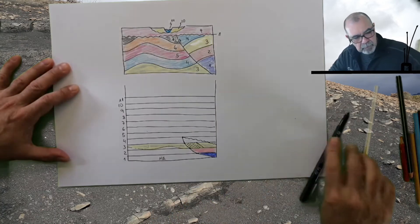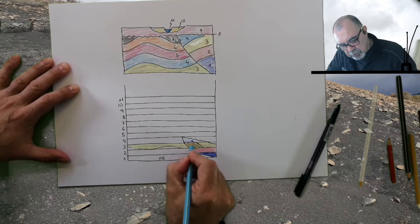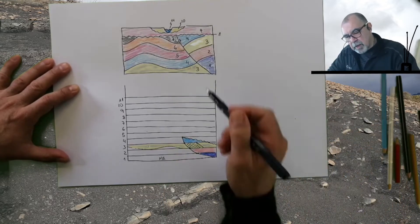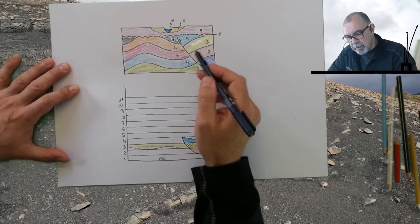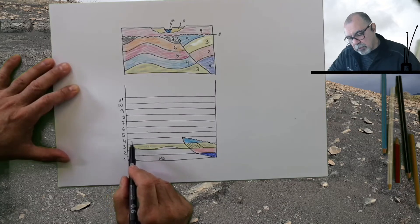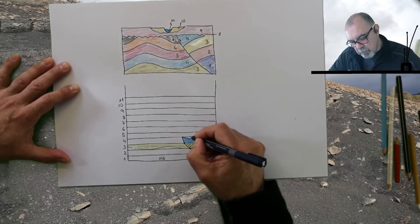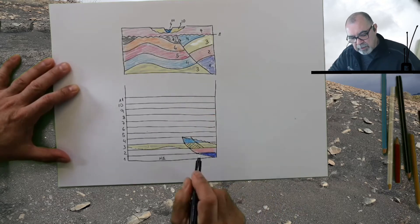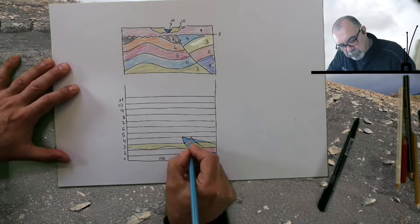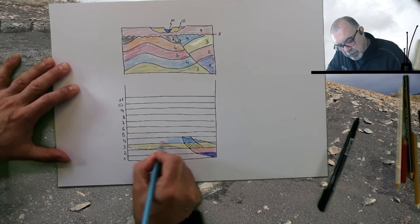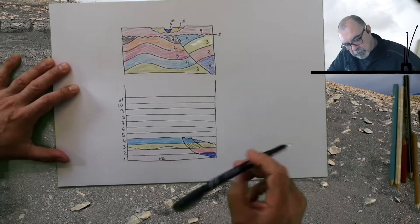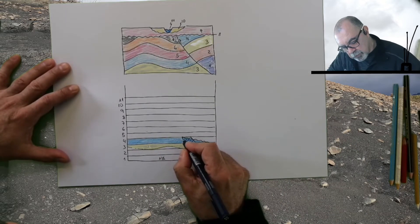I will put some color here for our unit four. At the same time, this is the hanging wall. On the other side of the fault we have unit four again, and the top of unit four is more or less here, and the base of unit four is here. As you can see, in some parts we are going to have an overlap of the two units due to the reverse fault.